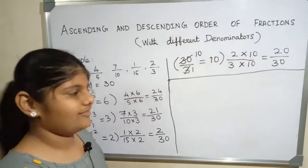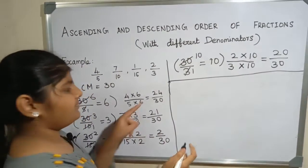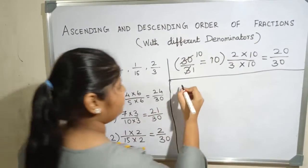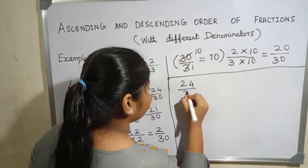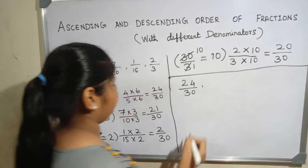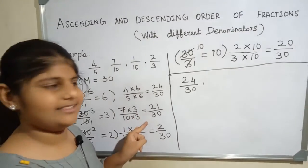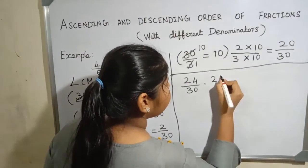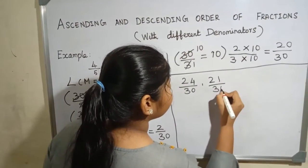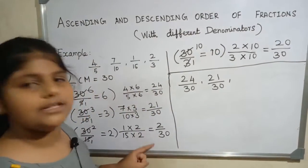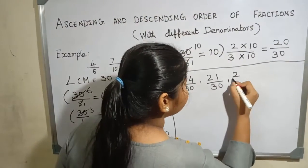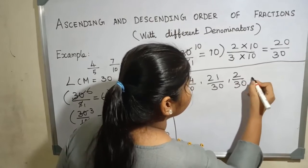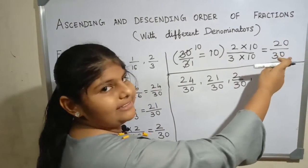The like fractions of the given fractions are 24 by 30, 21 by 30, 2 by 30, and 20 by 30.